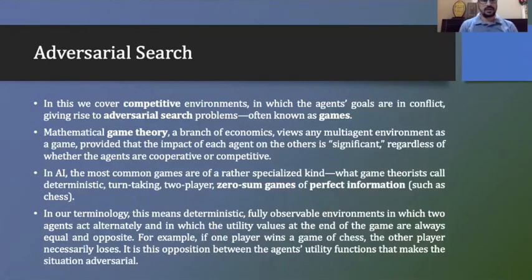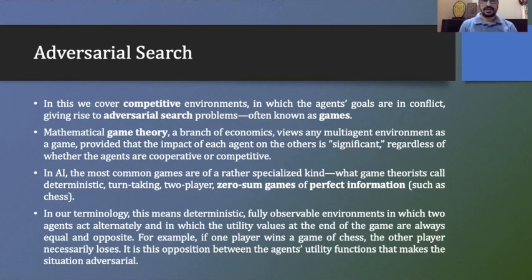After going to local search and optimization problems, let's see another type of searching, which is called adversarial search. Adversarial search is based on game theory. In game theory, two opponents are there, two players are there who are playing the game. And at last, based on their utility function value, the winner will be decided. So based on that concept, adversarial search has been prepared.